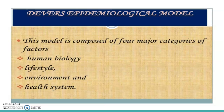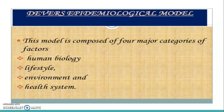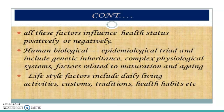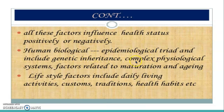The next one is the diverse epidemiological model. This model is composed of major categories: human biology — your human body; lifestyle — the way you live; environment — the people around you, the surroundings, and customs; and the health system — which health system you come under and whether you have access to immediate healthcare facilities. All these factors influence health status positively or negatively. Human biological factors include genetic inheritance, complex physiological systems, and factors related to maturation and aging.